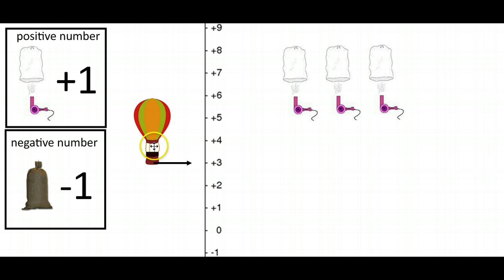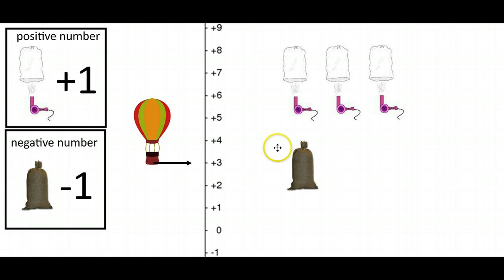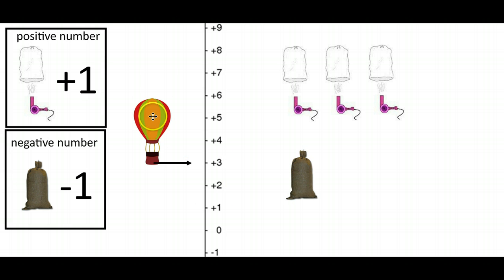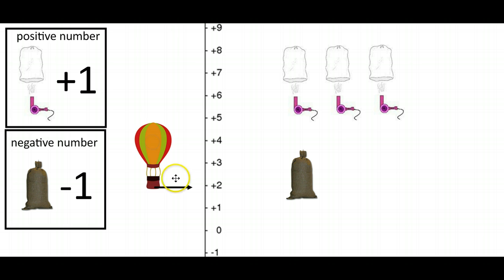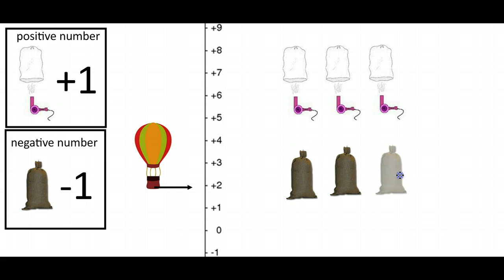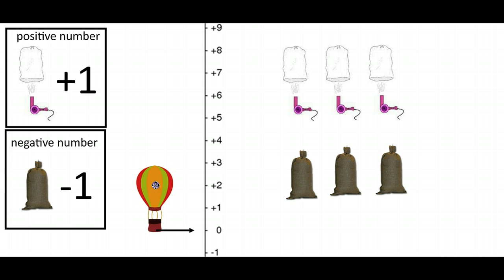Those are like our positive numbers — when we're adding we go up the number line and get greater. If I add a sandbag to my balloon it's going to make it heavier and weigh it down, so my balloon would sink by one. If I added another two sandbags to my hot air balloon it would sink down two spots and I'd be back to zero.